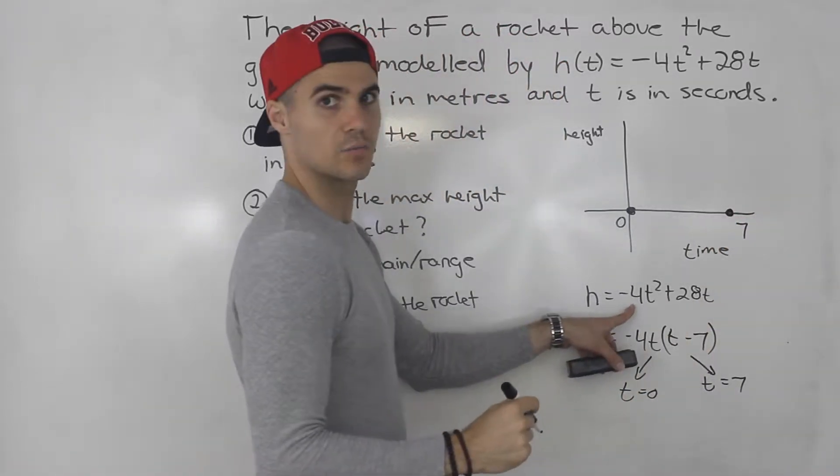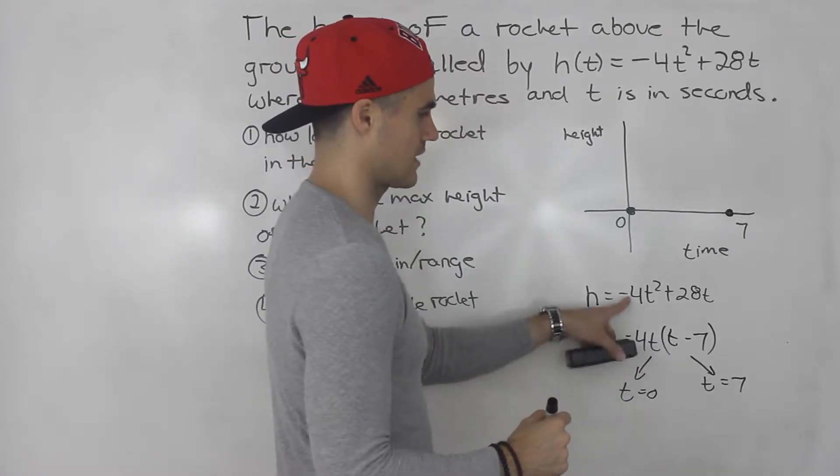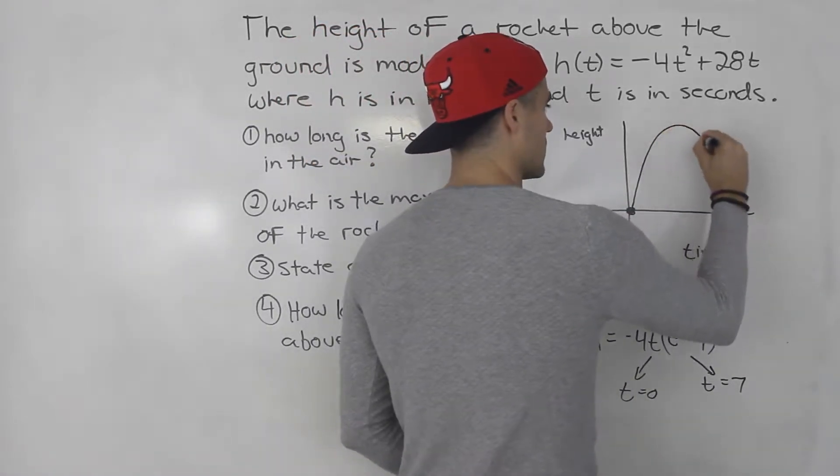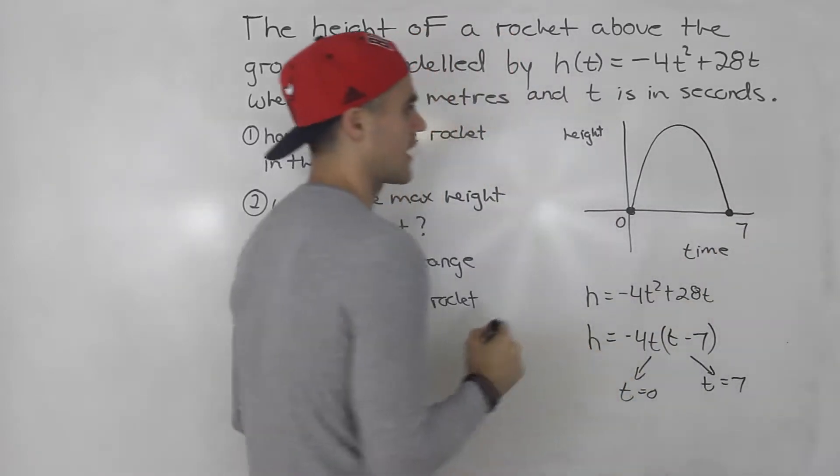We're at 0 here and then we're at 7 over here. Notice that this parabola is opening down because the a value is negative. And that makes sense, right? Because the rocket's going to go up and then it's going to come back down.